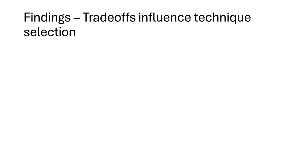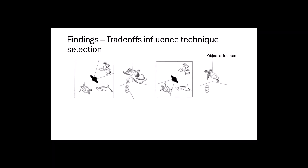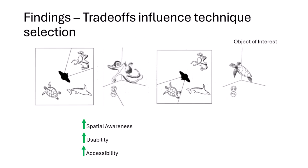Although participants generally enjoyed the techniques we proposed, participants did not always prefer the technique they considered easier or more efficient due to other considerations. For the Object of Interest technique, participants felt it helped them be aware of their surroundings (good for spatial awareness), helped them identify objects they were viewing (good for usability), and was easier to switch their view to an object compared to panning with a joystick (good for accessibility). However, the instant camera transition to the object was disorienting, which harmed spatial awareness, and the presence of the UI in the scene detracted from the realism of the environment, which can harm the overall user experience.